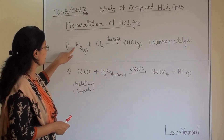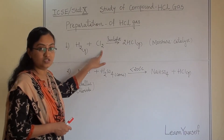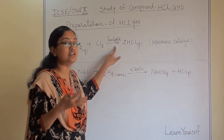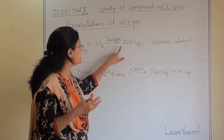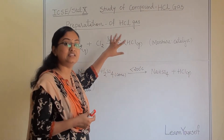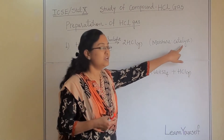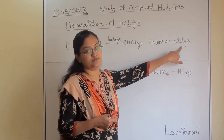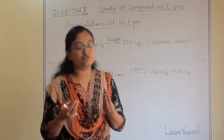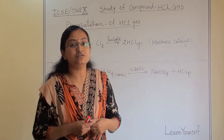The first reaction involves hydrogen gas along with chlorine gas. When it is exposed to sunlight or diffuse sunlight, we are going to get hydrogen chloride gas. In this situation, atmospheric moisture will act as a catalyst and speed up the reaction process.